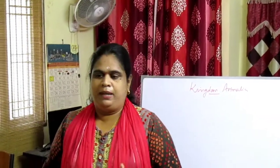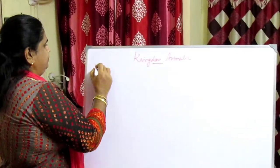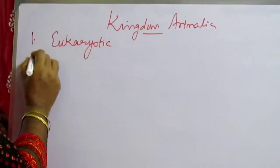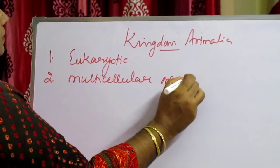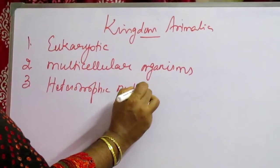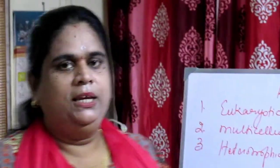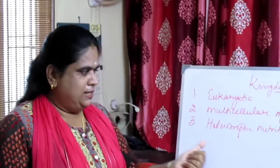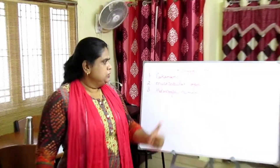The animal kingdom is classified mainly based on closely resembling characteristic features. Kingdom Animalia can be defined as: they are eukaryotic, they are multicellular organisms, and they have heterotrophic nutrition. Eukaryotic means they have a well-defined nucleus. Multicellular means they are made of many cells. Heterotrophic nutrition means they cannot prepare food by themselves; instead, they depend on others for their food.